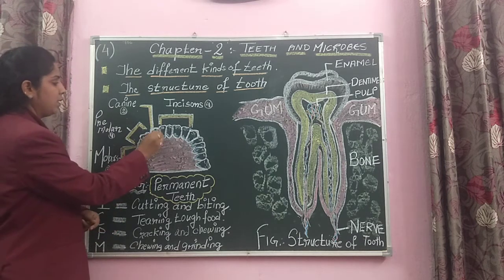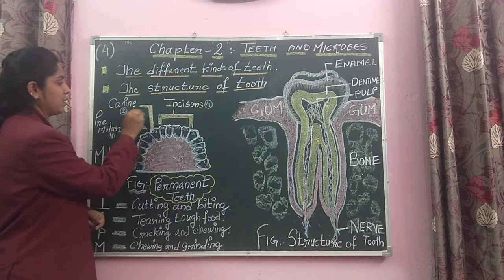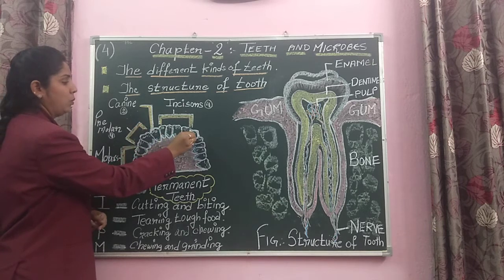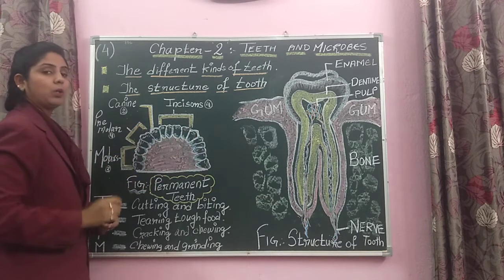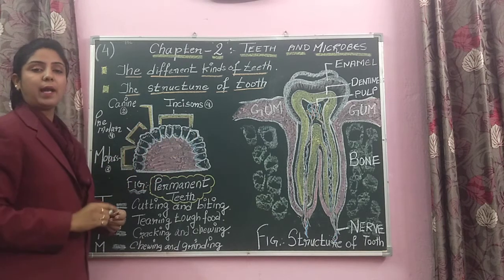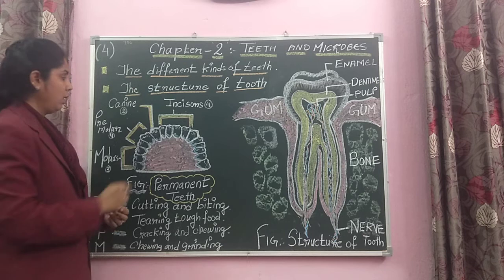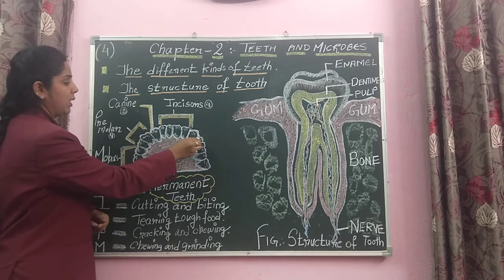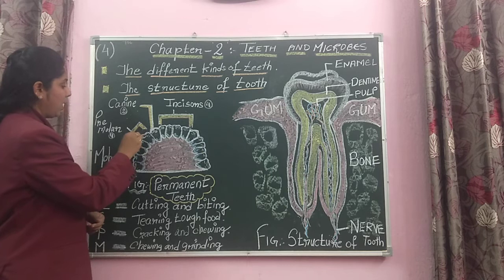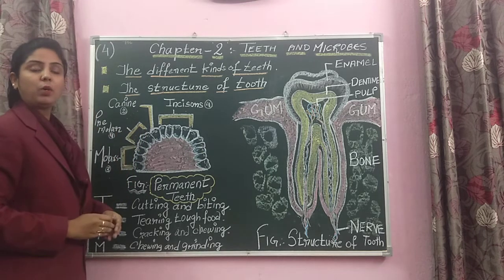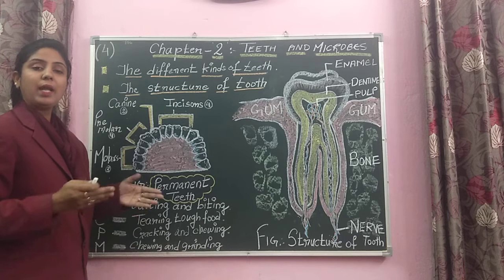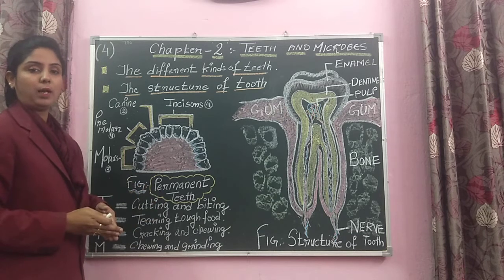You can also see the pointed teeth — that is the canine. There are 2 canines in the upper jaw. Next, there are 4 premolars in the upper jaw, making a total of 8 premolars.